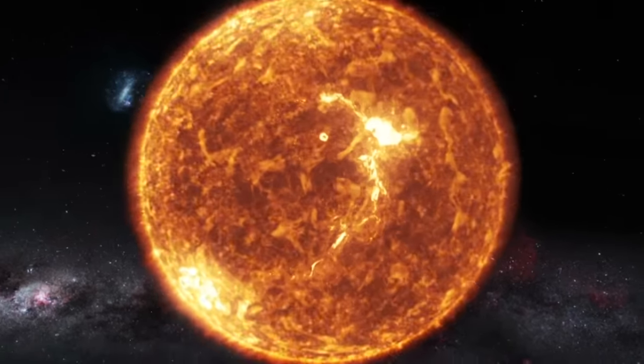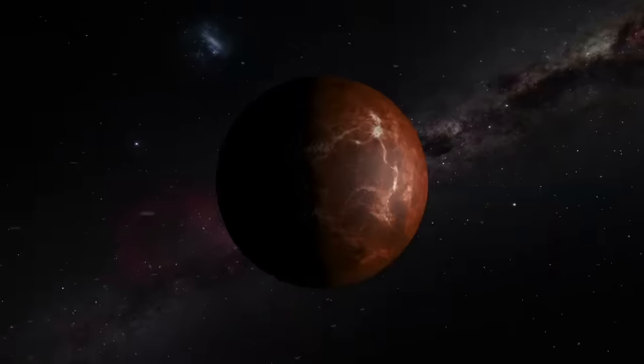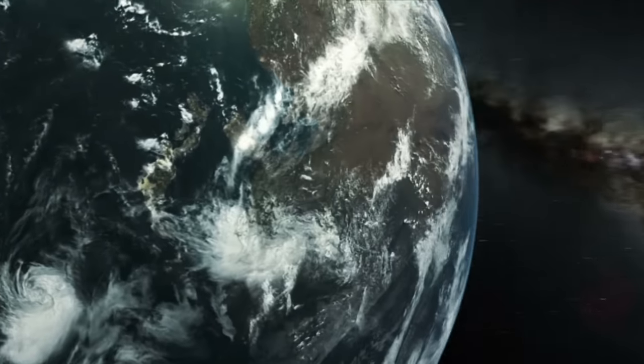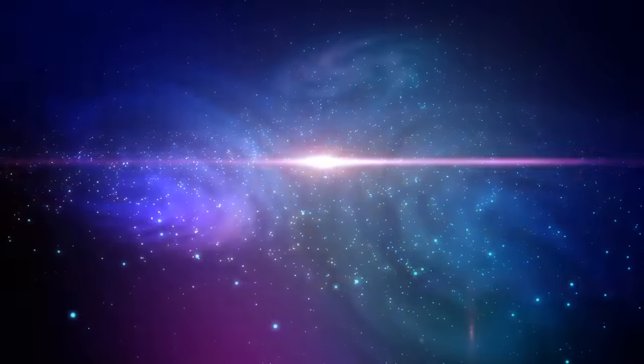In 7 billion years, the Sun will hit its maximum radius, 256 times its current size. Mercury, Venus, and maybe Earth will be destroyed. And then the Sun becomes a carbon-oxygen white dwarf with about 50% its present mass.